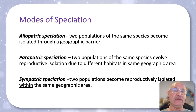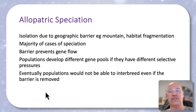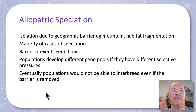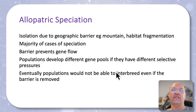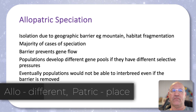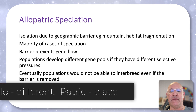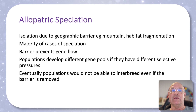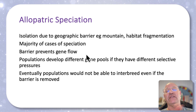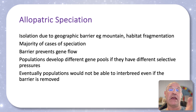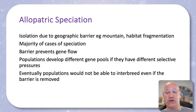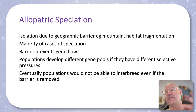Now, the modes of speciation. Allopatric speciation involves a physical barrier, so there's no gene flow between populations. If they've got different selection pressures they're going to evolve differently and have different gene pools. With a physical barrier preventing gene flow and different selection pressures, different gene pools develop. So even if the barrier is removed in the future, no interbreeding will occur and they are reproductively isolated.